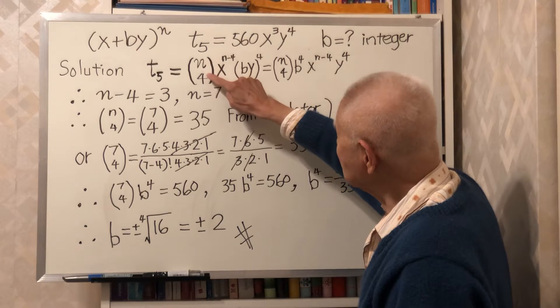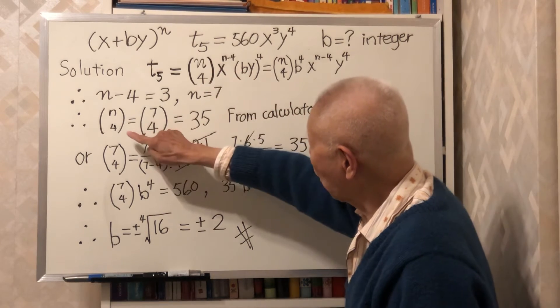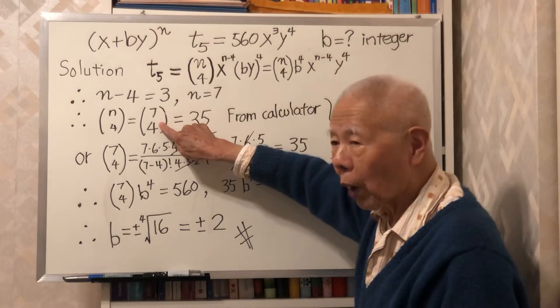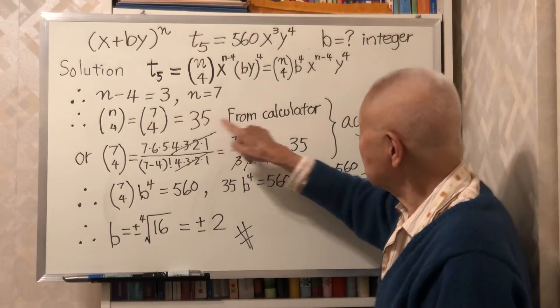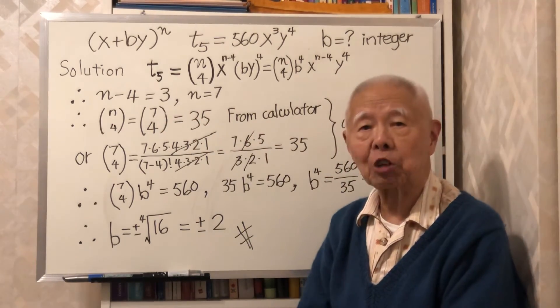So n is 7. Then 7 combination 4. What is this number? You can use your calculator and the answer is 35.